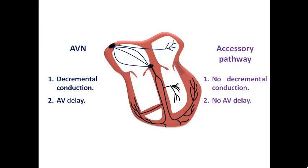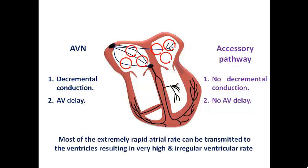This accessory pathway is characterized by no decremental conduction and no AV delay, so it can transmit a very rapid atrial rate to the ventricles. It is present since birth and is considered congenital. In sinus rhythm, the patient may be asymptomatic or may develop AVRT, either orthodromic or antidromic. The problem arises when the patient develops paroxysmal AF, characterized by multiple wavelet re-entries in the atrium resulting in an extremely rapid and irregular atrial rate, most of which is transmitted through the accessory pathway to the ventricles, causing pre-excited AF.